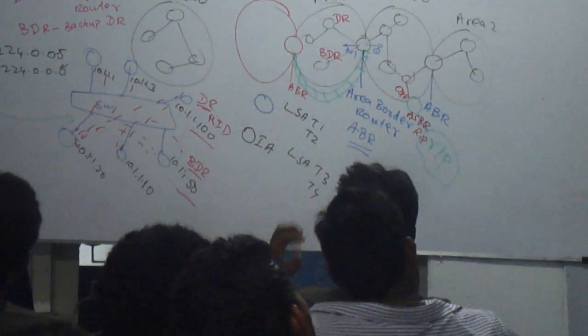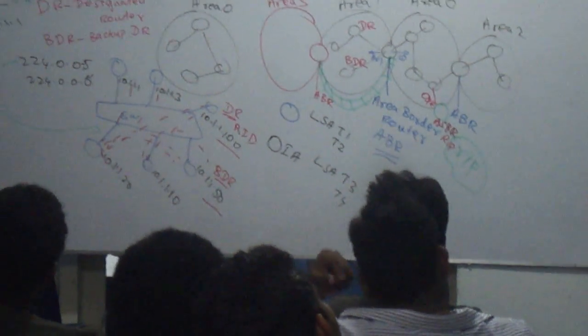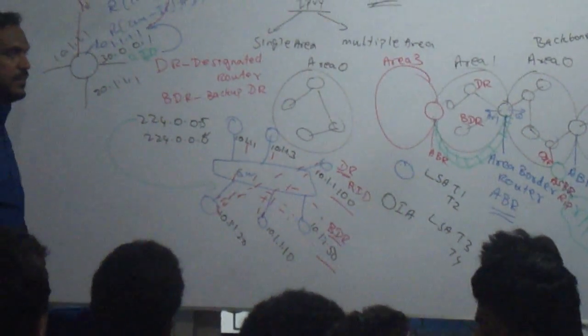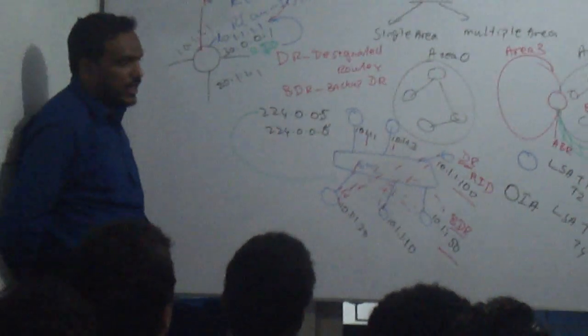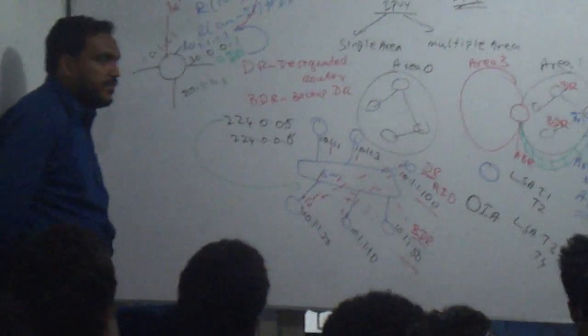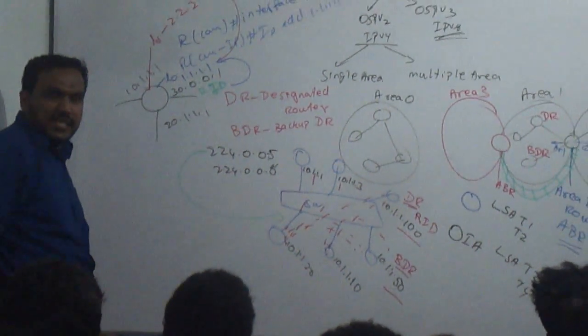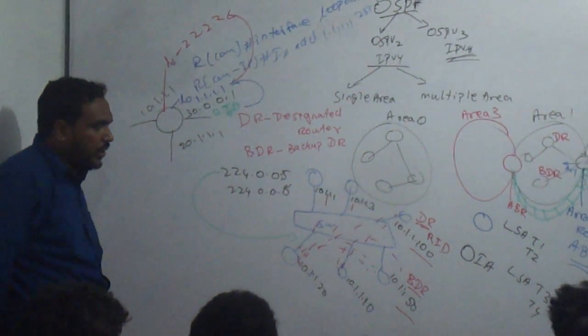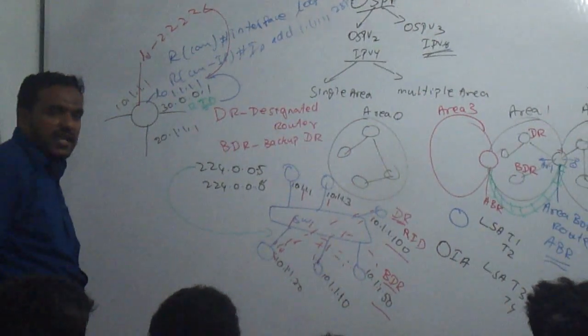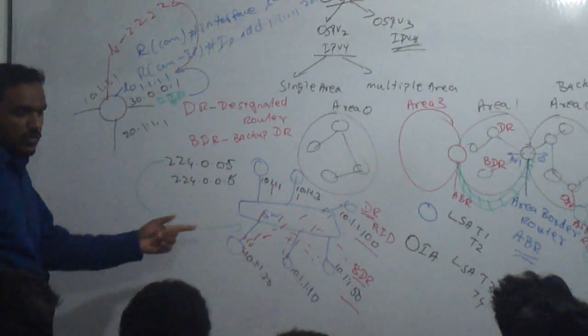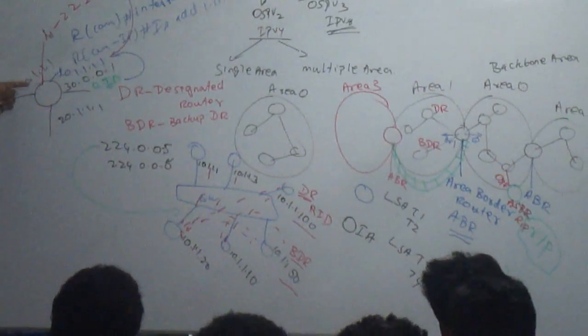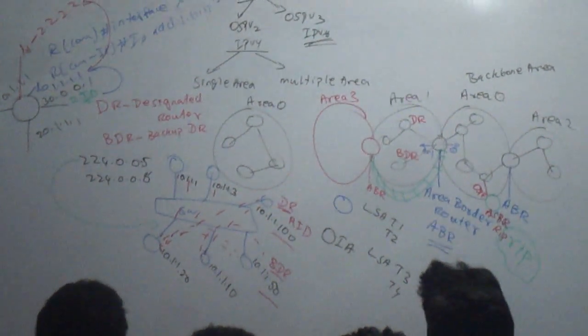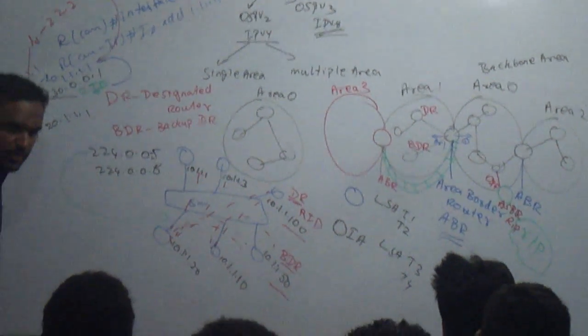To summarize, the key concepts covered include: single area and multiple area OSPF, backbone area, ABR, ASBR, O record, OIA record, DR, BDR, router ID, router ID elections, loopback interfaces and how to create them, LSA types 1 through 4, and the multicast addresses 224.0.0.5 and 224.0.0.6.